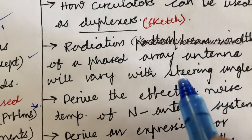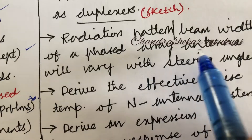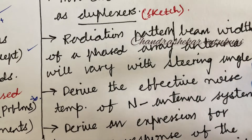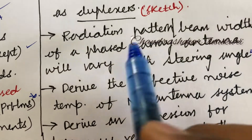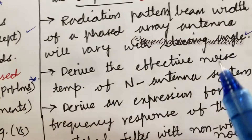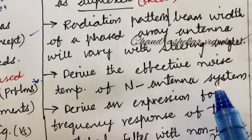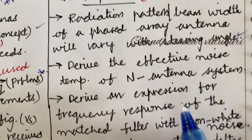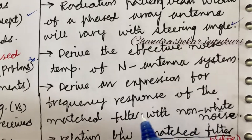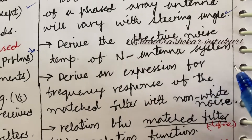Write down all answers in point-wise format. The radiation pattern and beam width of a phased array antenna will vary with the steering angle — explain the term. The radiation pattern may be a short question. Derive the effective noise temperature of an antenna system, and derive an expression for the frequency response of the matched filter with non-white noise — out of these two expressions you will be getting one question for sure.